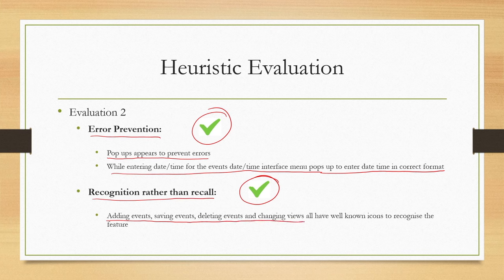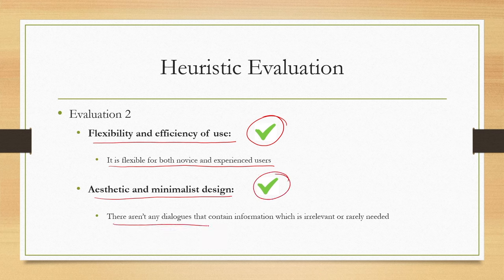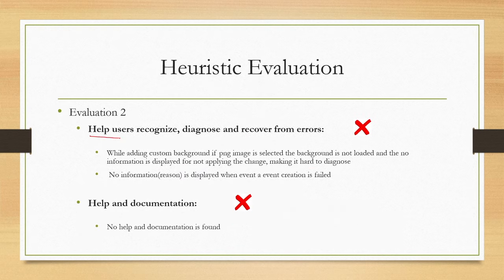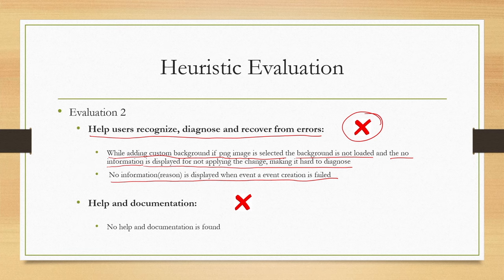Evaluator 2 found recognition rather than recall is supported: adding, saving, deleting events and changing views all have well-known icons. Flexibility and efficiency of use is supported: the system is flexible for both novice and experienced users. Aesthetic and minimalist design is supported: no dialogues contain irrelevant or rarely needed information. Help users recognize, diagnose and recover from errors is not supported: if a PNG image is selected for custom background and the background is not loaded, no information is displayed making it hard to diagnose, and no information is displayed when event creation fails. Help and documentation is also not supported.